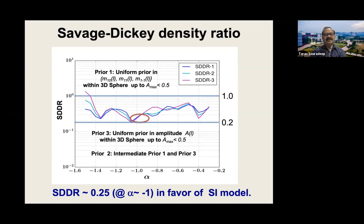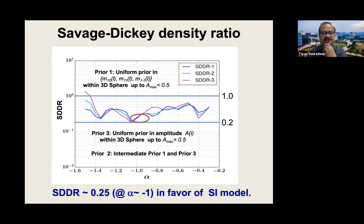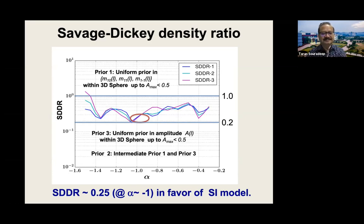Any Bayesian analysis depends on priors. We varied the prior on these parameters in three different ways — the one I like most is uniform prior in amplitude, and we also did two other priors. In all cases, the Savage-Dickey ratio is well contained within 10.